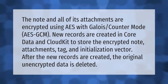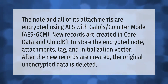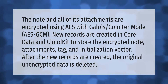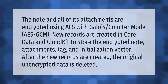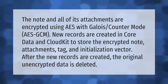The note and all of its attachments are encrypted using AES with Galois Counter Mode (AES-GCM). New records are created in Core Data and CloudKit to store the encrypted note, attachments, tag, and initialization vector. After the new records are created, the original unencrypted data is deleted.